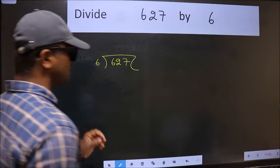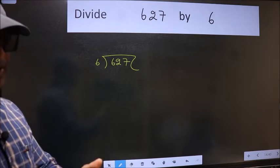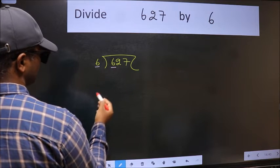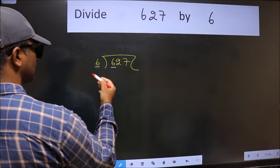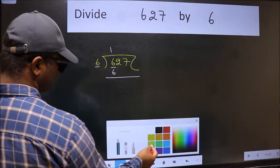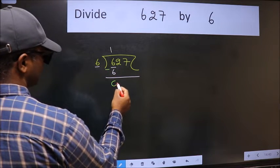This is your step 1. Next. Here we have 6 and 6 here. When do we get 6 in the 6 table? 6 once 6. Now we should subtract. We get 0.